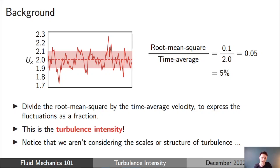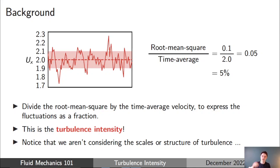The way I like to think of this is that the root mean square represents the shaded area of fluctuations and you're comparing their ratio to the actual mean value. In the example, the root mean square is about 0.1 meters per second and the mean is 2 meters per second, so that's 5% turbulence intensity. This single number tells us how significant those fluctuations are. It's important to note we aren't considering the scales or structure of the turbulence — just measuring the fluctuations at a point.